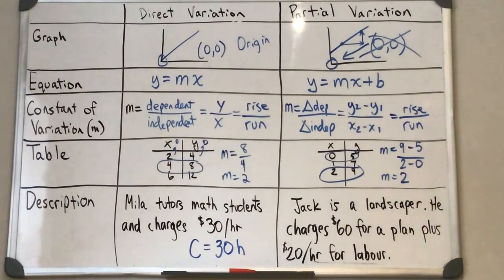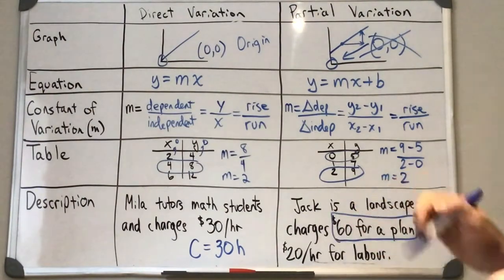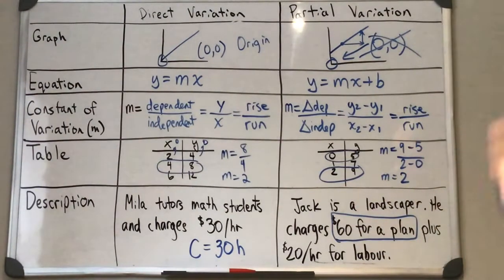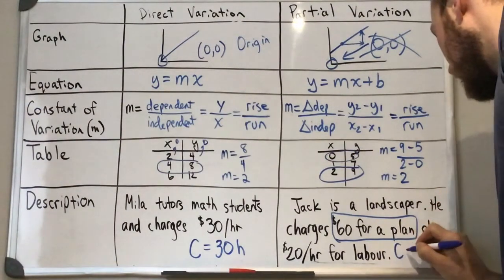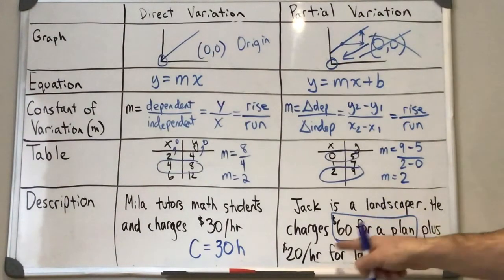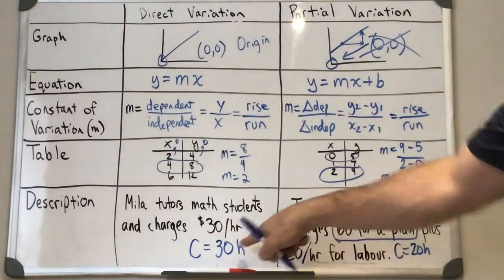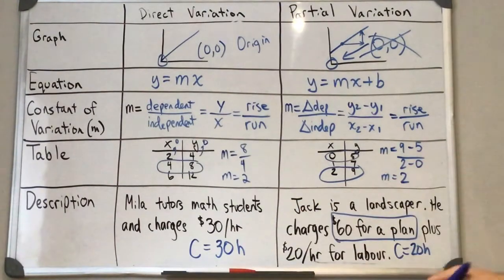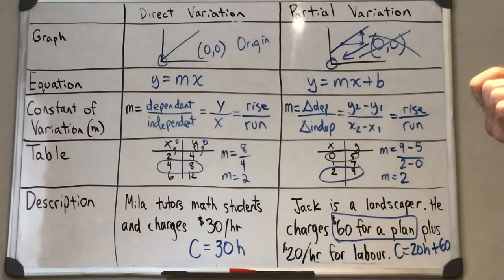If we look at this one here, Jack is a landscaper. He charges $60 for a plan plus $20 per hour for labor. So we can see here, we have that initial cost or that one-time cost that we're going to be looking for. So in this one, the cost would be $20 per hour. So we're still going to have something similar to the previous equation, but we're going to have to add $60 for that upfront landscaping plan cost.